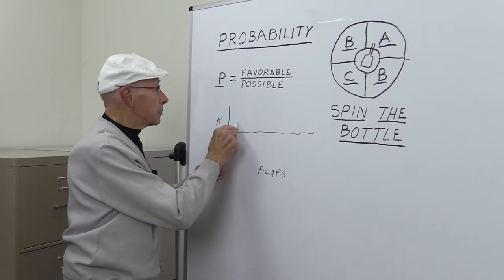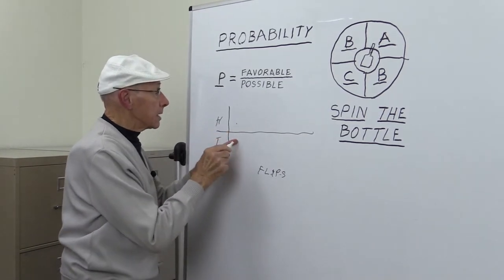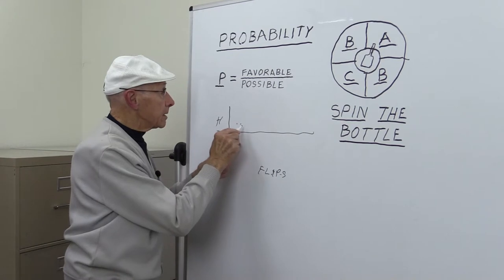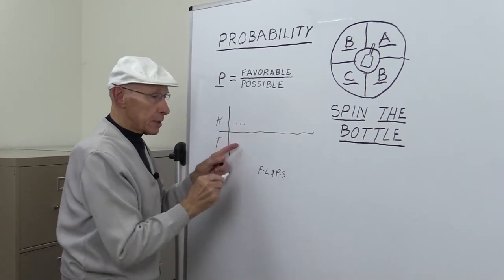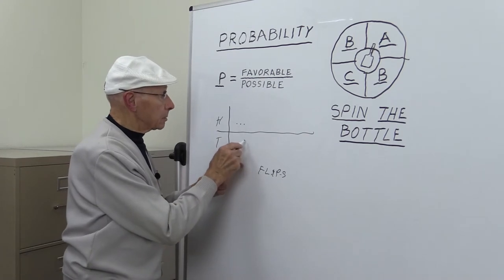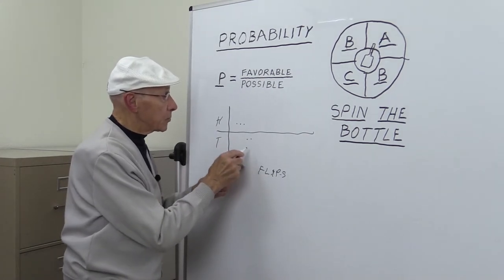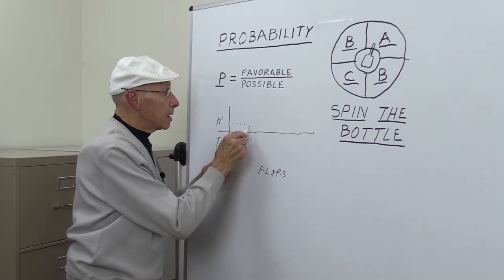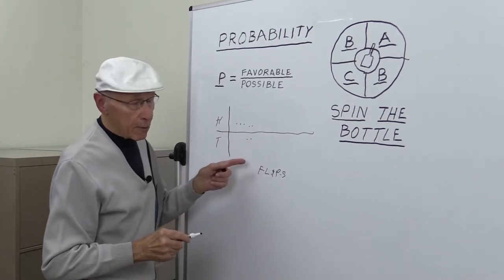So the first flip, let's suppose, is this. And lo and behold, the second flip is that. And third flip. And you say, gee, isn't it ever going to land on tails? Yes, it will. So let's suppose that the next two are tails and the next several others or a couple others are heads.